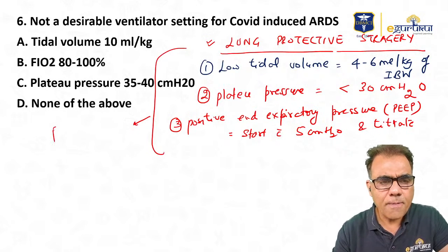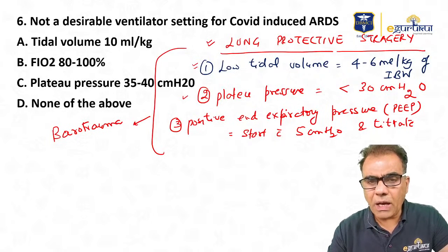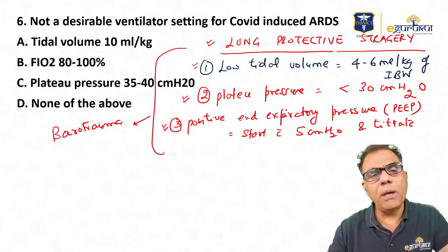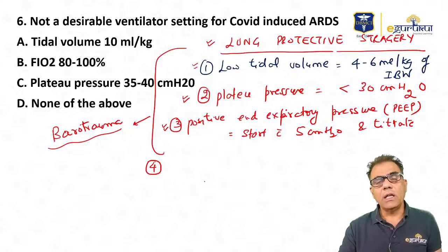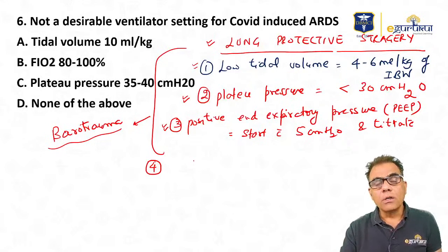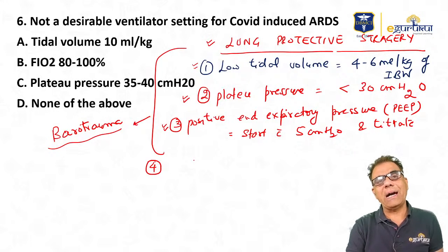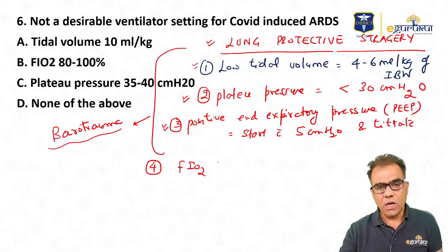All these measures are done to protect against barotrauma. Low tidal volume, keeping an eye on plateau pressure, and using minimal PEEP will prevent ARDS worsening. Also, oxygen toxicity is very dangerous — it can produce irreversible ARDS. Therefore FiO2 should be maintained at less than 0.6 (60%). If the requirement is more than 60%, increase PEEP.